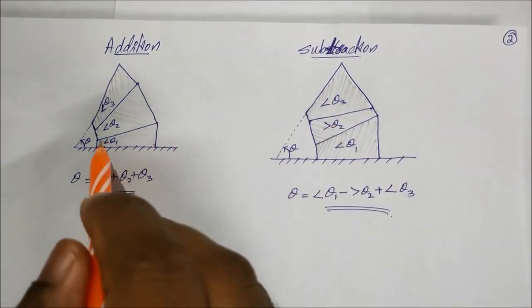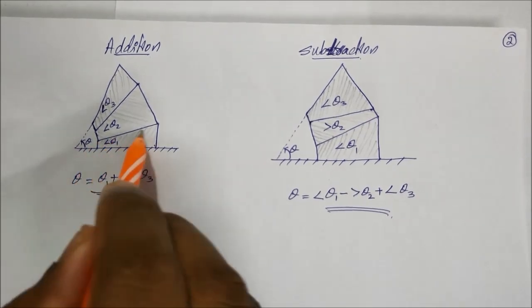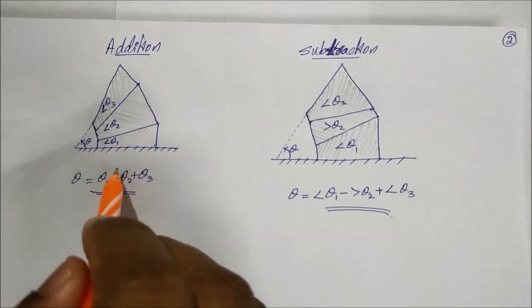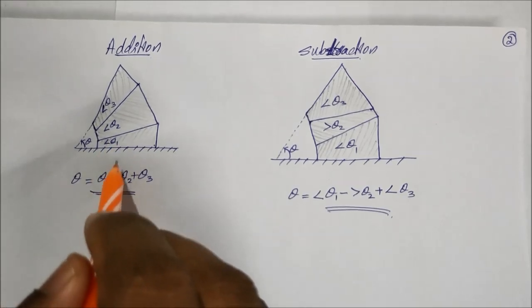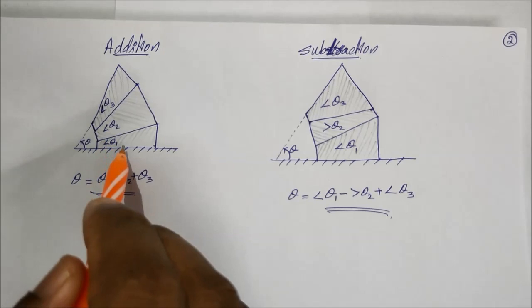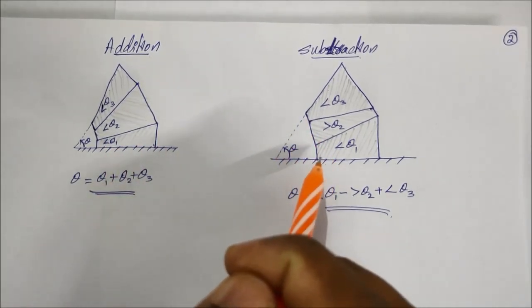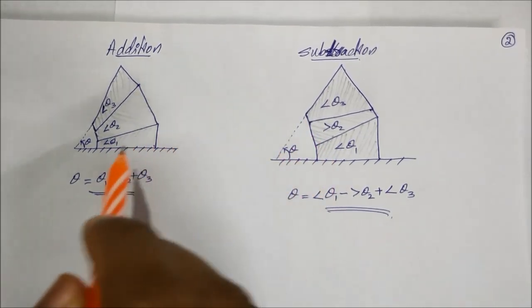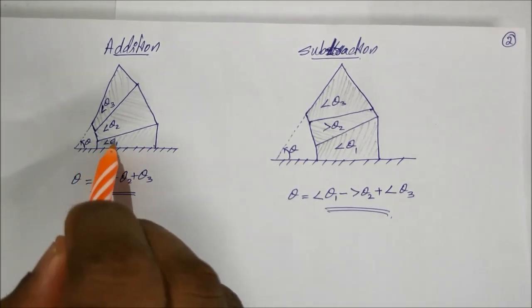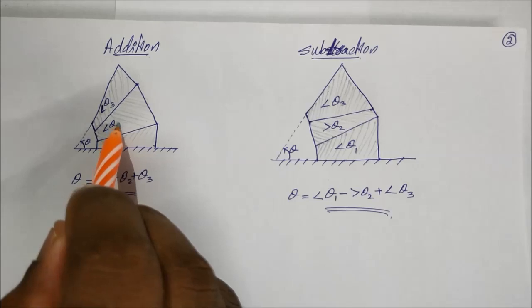For subtraction and addition problems, you will first select the slip gauge and angle gauge. For addition, two common slip gauges and angle gauges are used. For subtraction, the slip gauge and angle gauge combination is possible. Addition will keep the first angle theta and second angle theta.